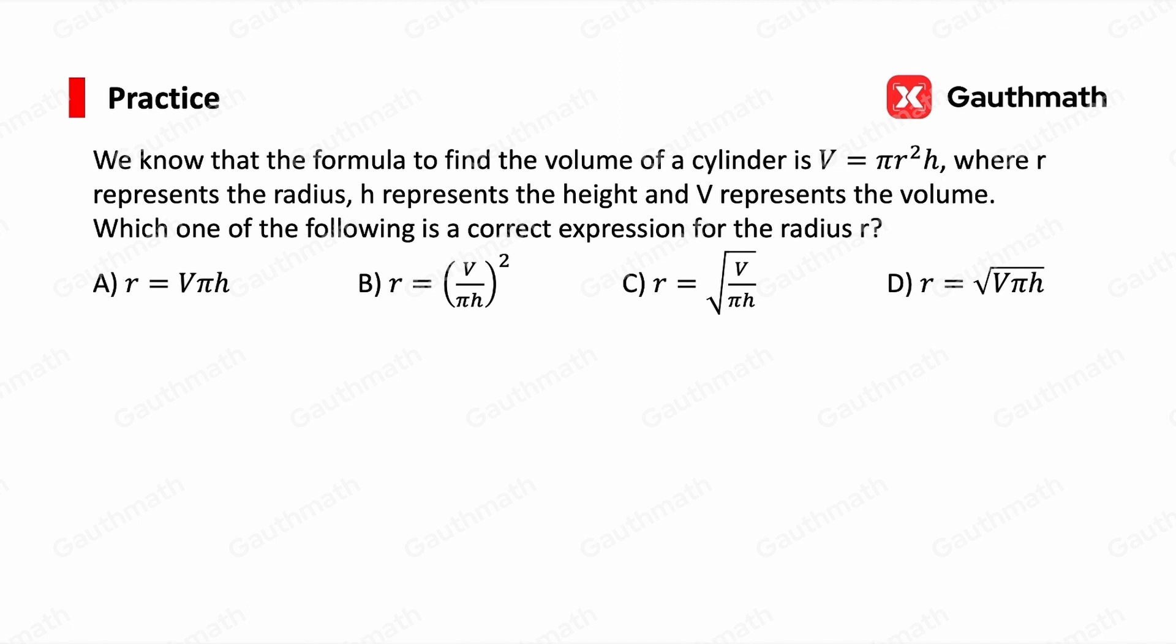We have four choices here, and we have to isolate the radius r. The first step, we can divide πh on both sides. For the right-hand side, the π and h cancel. So we got V/(πh) = r².